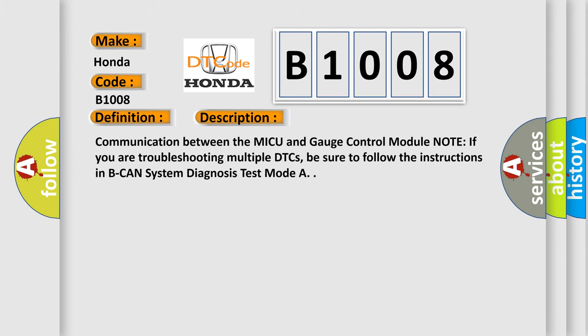Communication between the MICU and gauge control module. Note: if you are troubleshooting multiple DTCs, be sure to follow the instructions in B-CAN system diagnosis test mode A.